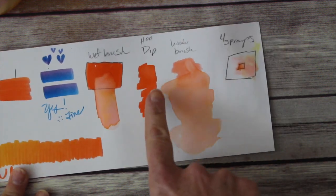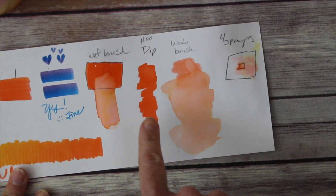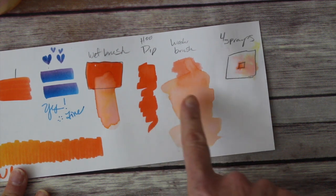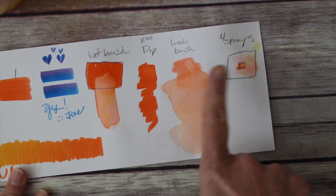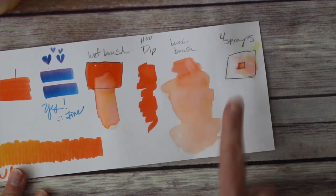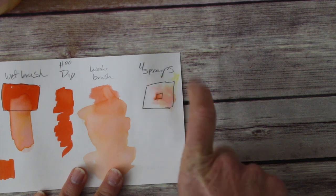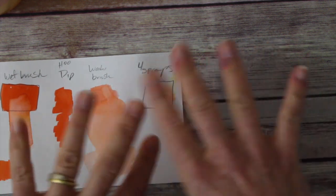You can also dip the nib right into water to get a lighter variation, or you can use a water brush and pick up some material. Here I put a little bit of color in the middle and then sprayed it with a pump spray so you can see that yes, it will bleed out.